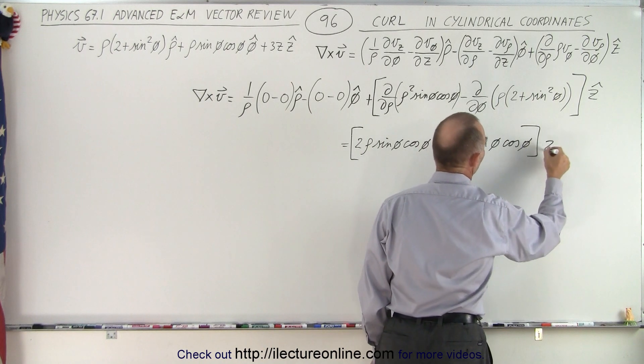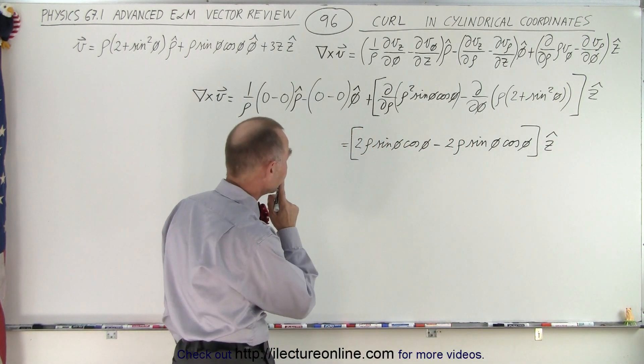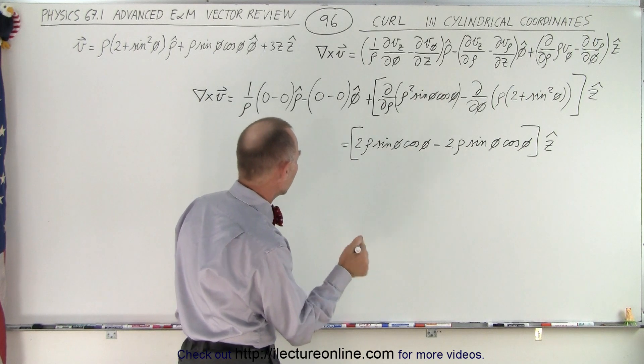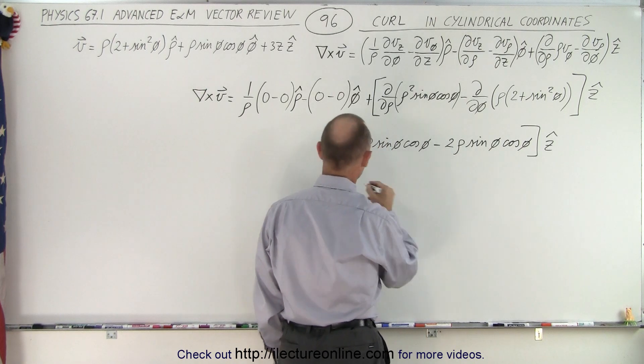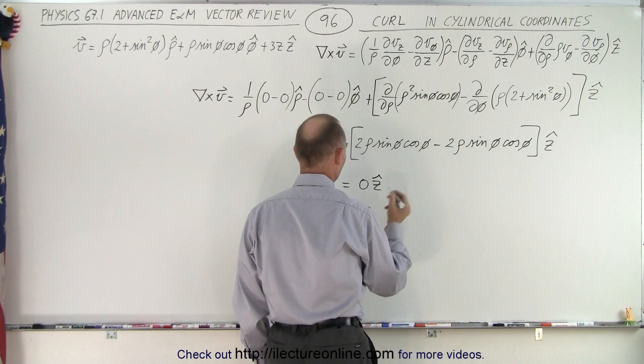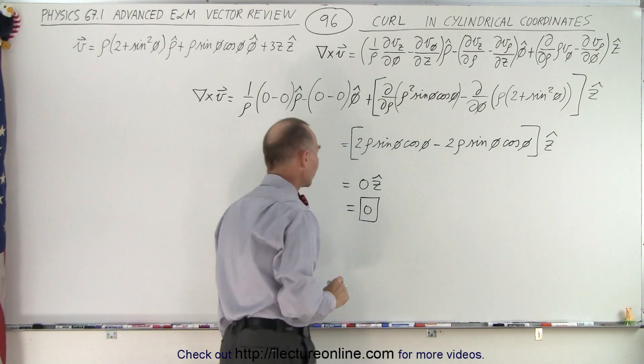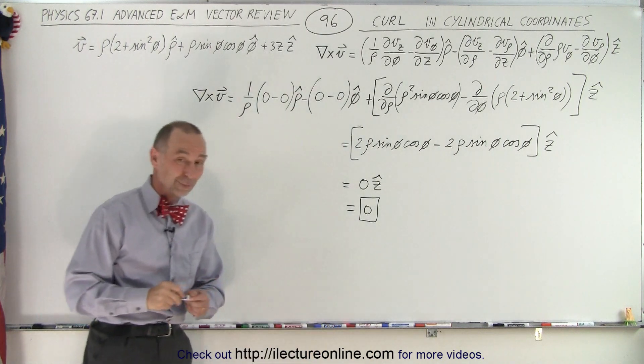So that's this whole thing in the z direction. So we do have a z component. But now when I look at it, wait a minute, that looks identical. Doesn't it? Two times rho times sine phi cosine phi. So this is identical. So that's zero in the z direction or simply zero. The end result of that particular curl, we get zero here, we get zero there. And it turns out the third component is zero as well.